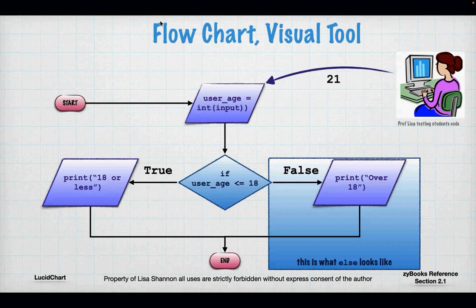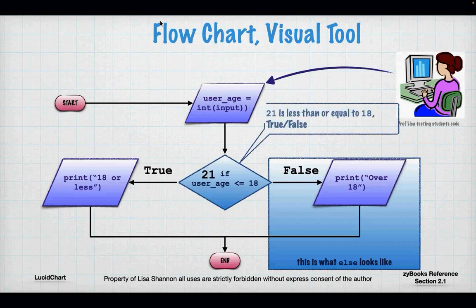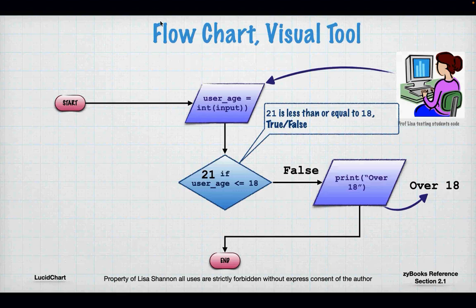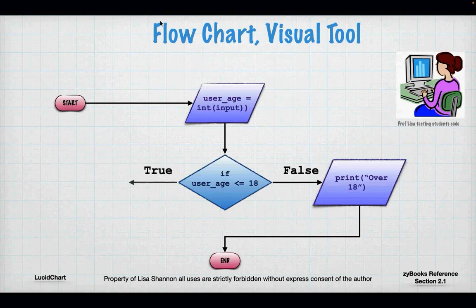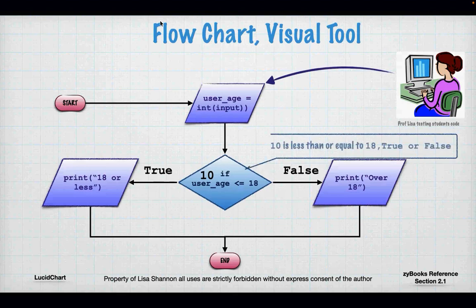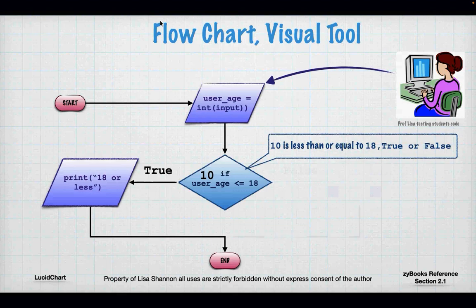Professor Lisa is entering 21 as the input. userAge is less than or equal to 18 — that is false. So the entire true side from that diamond disappears, because that's what Python does. It doesn't unwrite your code, but it ignores it — it's like that code doesn't exist. When you see 'false' to the right on a flowchart, that's an else statement after the if. Now let's do this again with input 10. 10 is less than or equal to 18, so it evaluates to true and I'm going to print '18 or less' and end the program. That's branching in a language-agnostic fashion.